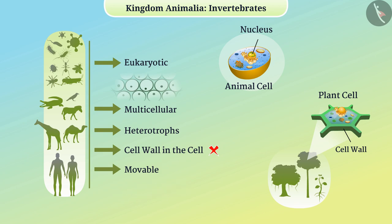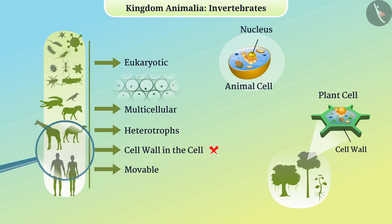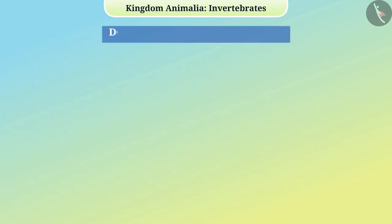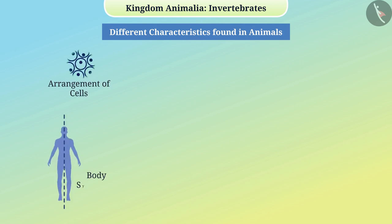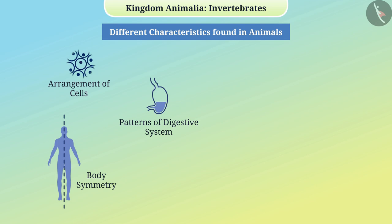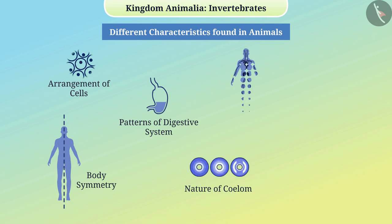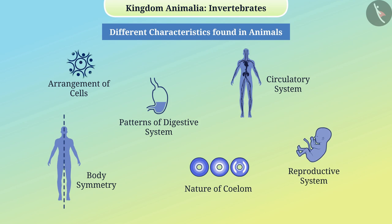Animals all around us are found with different body structures and different sizes. We can find similarities and classify animals based on different characteristics like arrangement of cells, body symmetry, patterns of digestive system, nature of coelom, circulatory system and reproductive system. Let us understand some features.